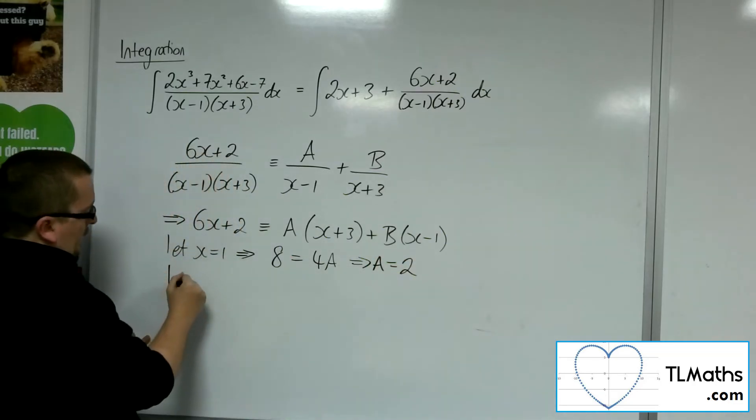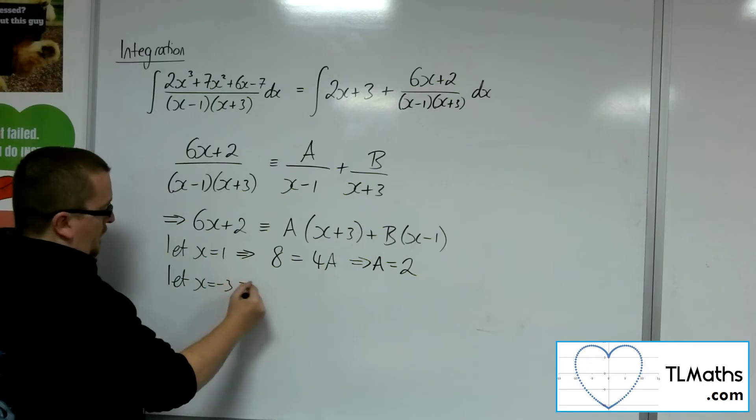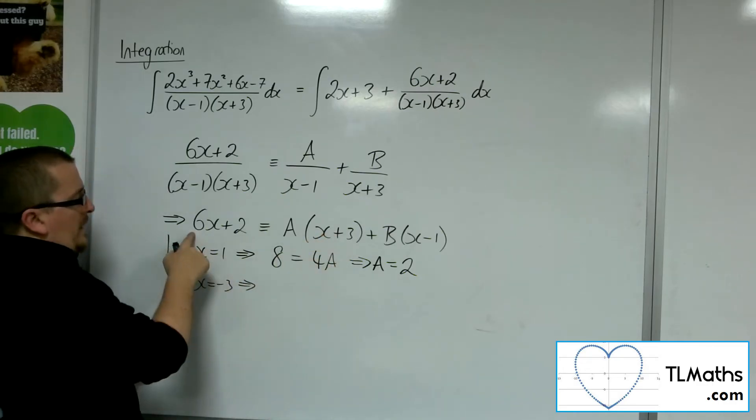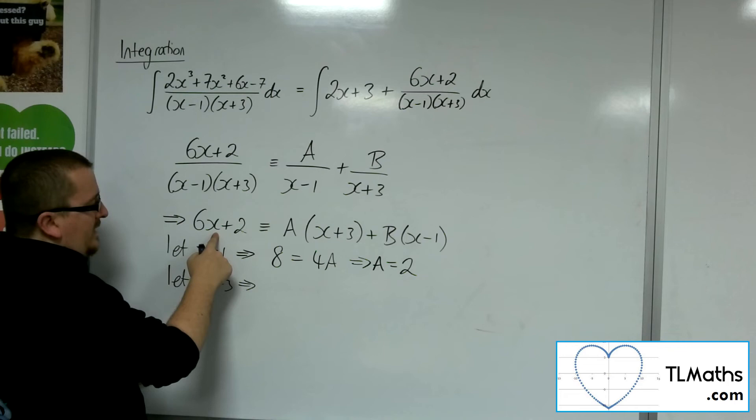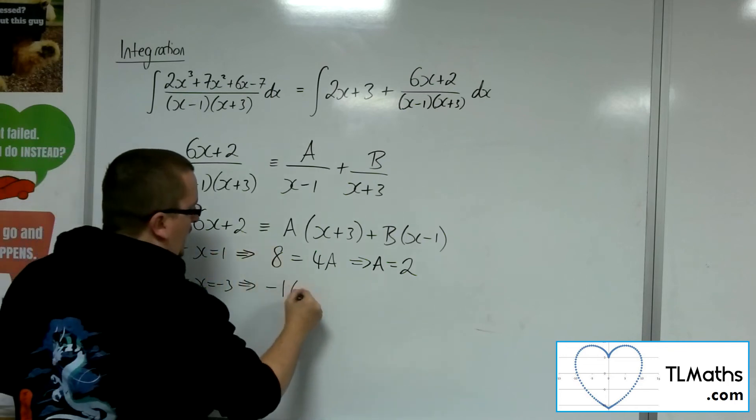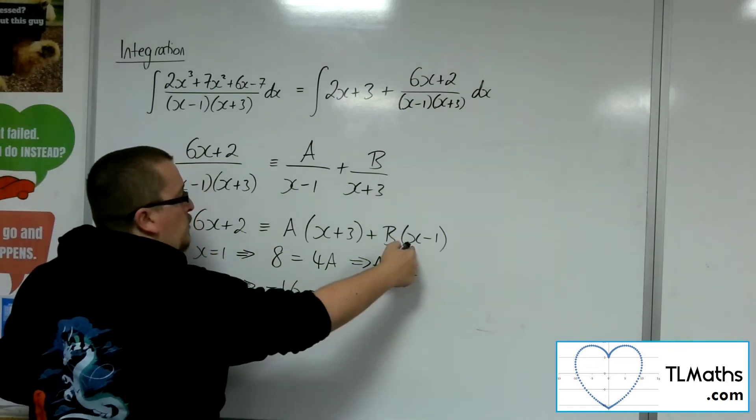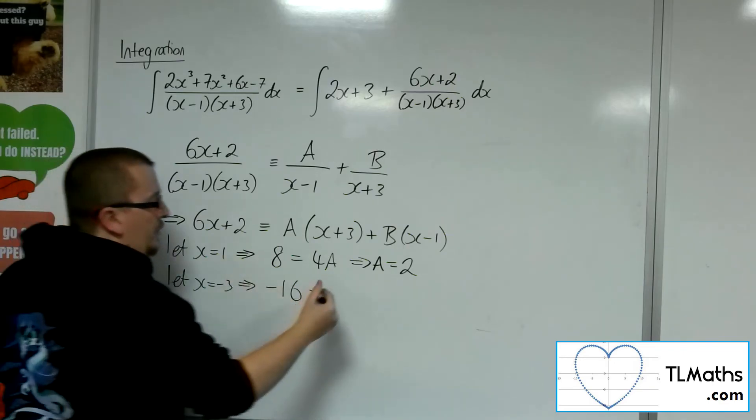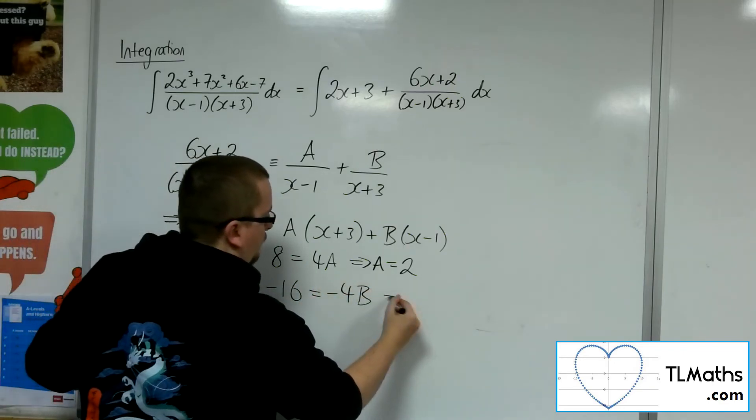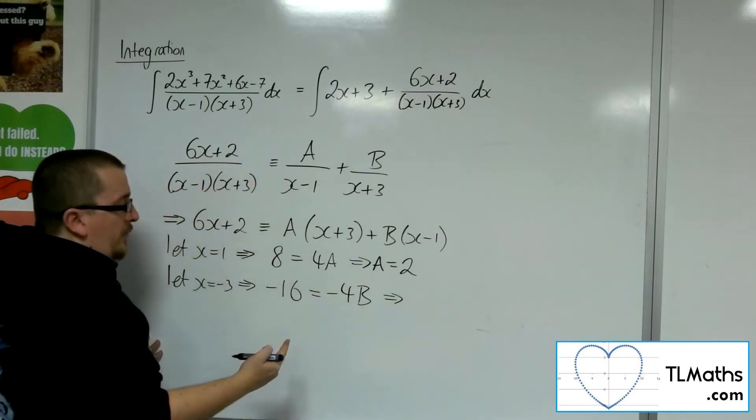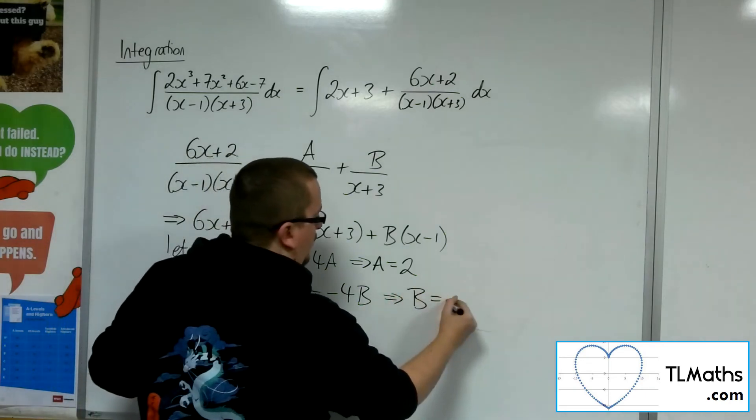Now, if I let x be minus 3 to knock out that bracket, I'm going to have 6 lots of minus 3, so minus 18 plus 2 is minus 16. Minus 3 take away 1 is minus 4, so minus 4B. Divide both sides by minus 4 gets me to 4, so B must be 4.